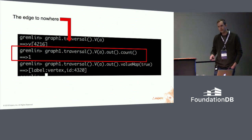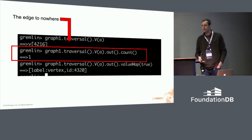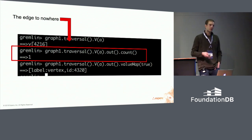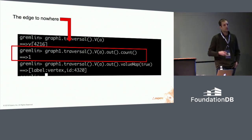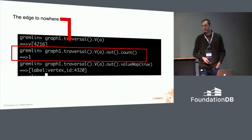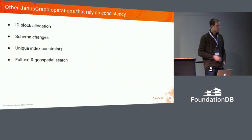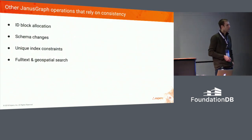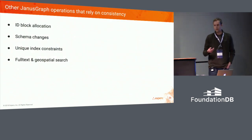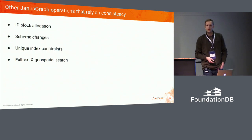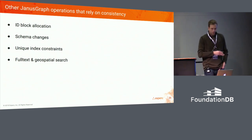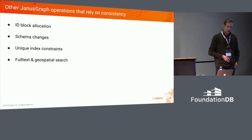There are things built into JanusGraph to try to lessen the chance of this happening on an eventually consistent backend, but they're not foolproof. Ideally we want to push this down into a system that is purpose-built and can handle it without any issues.